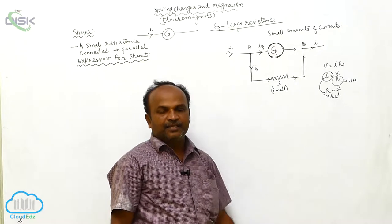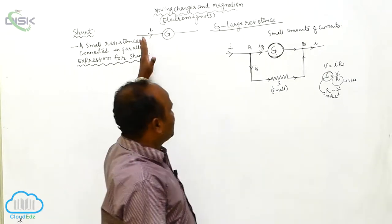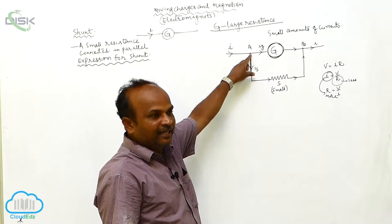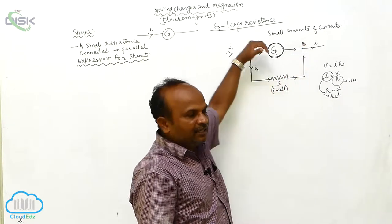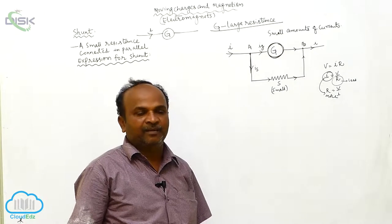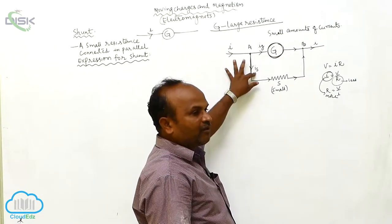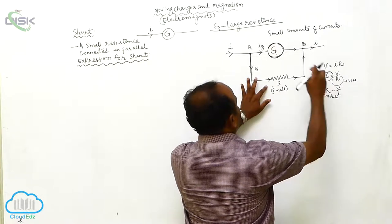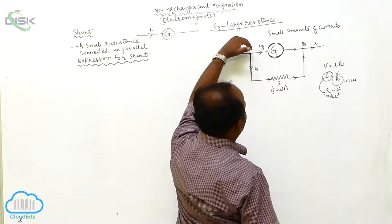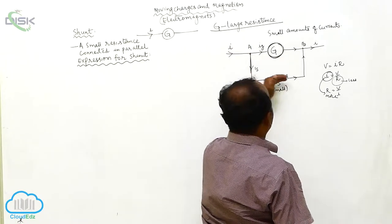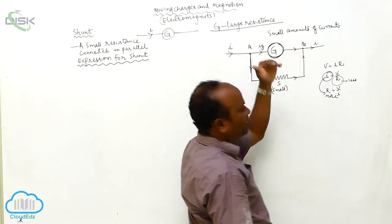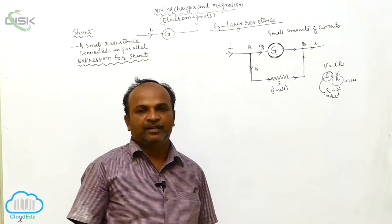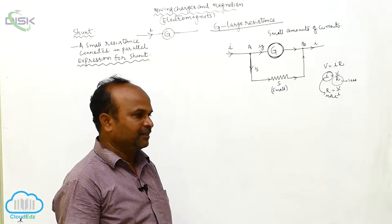By connecting the small resistance in parallel to the galvanometer, the total incoming current is divided — some of the current passes through the galvanometer, which is called IG, and the remaining current passes through the shunt resistance, represented as IS. Since the shunt resistance is very small, the current through it is maximum. The total current is largely bypassed through the shunt, with only a little current passing through the galvanometer, so there is no damage done to the galvanometer.